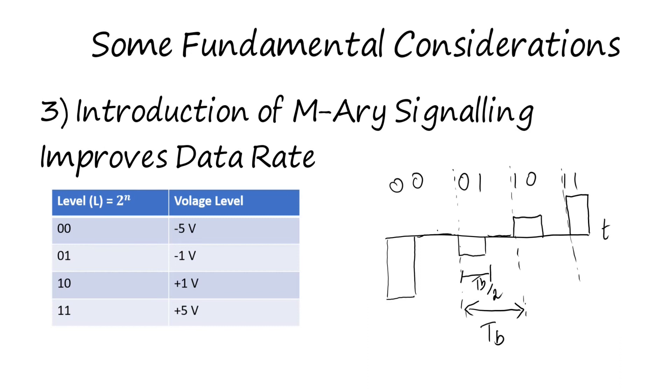Herein the data rate would increase by n-fold, where n is the number of bits stacked together. Presently the value of n we have considered is 2, and the number of levels L is equal to 2^n. Presently we have 2 bits, so the number of levels are 4. Note that as we increase n, the data rate would increase but we would desire a much more sophisticated receiver to decode the data.